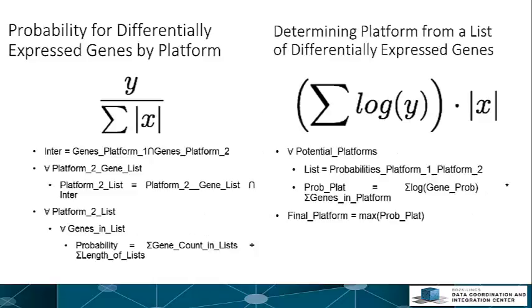The probability for differentially expressed genes by a platform is calculated by first choosing a platform, finding the gene lists associated with that platform, and creating a list of unique gene symbols. This process is then repeated for a second platform, and the intersect of the two unique gene lists is determined. Genes not in the intersect are removed from all gene lists associated with the second platform.